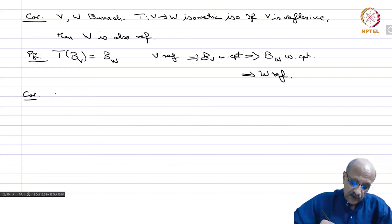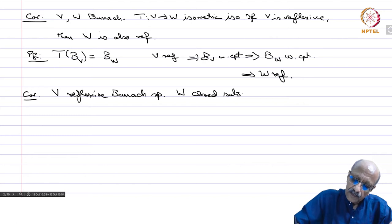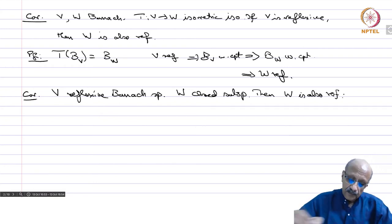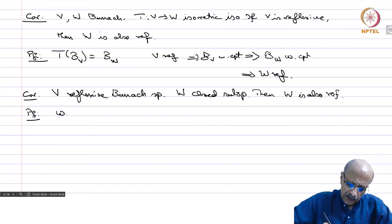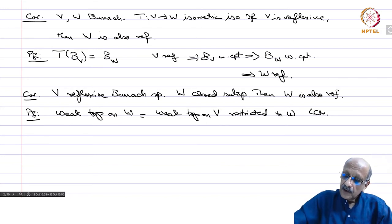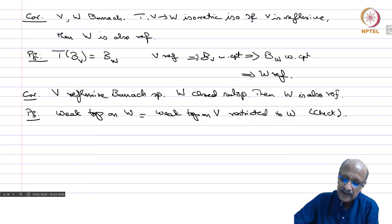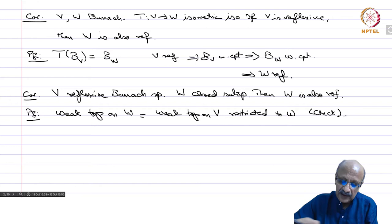Next corollary: V is a reflexive Banach space and W is a closed subspace. Then W is also reflexive. The weak topology on W is nothing but the weak topology on V restricted to W. This is a simple consequence of the Hahn-Banach theorem, because every continuous linear functional can be extended to the whole space, so the weak neighborhoods in W are precisely the weak neighborhoods in V intersected with W.